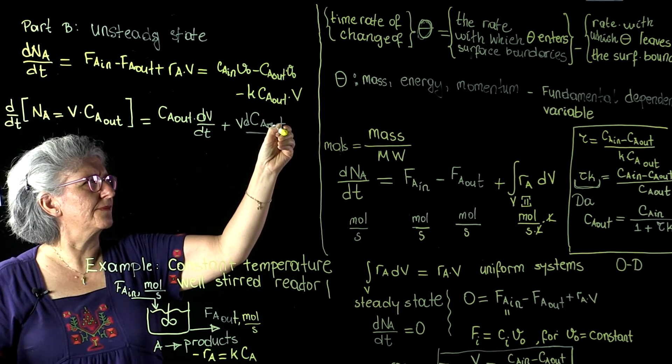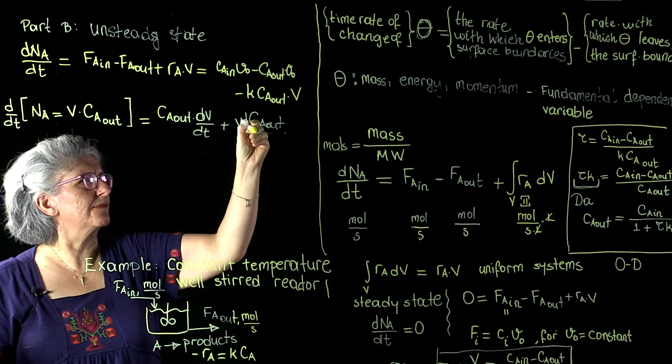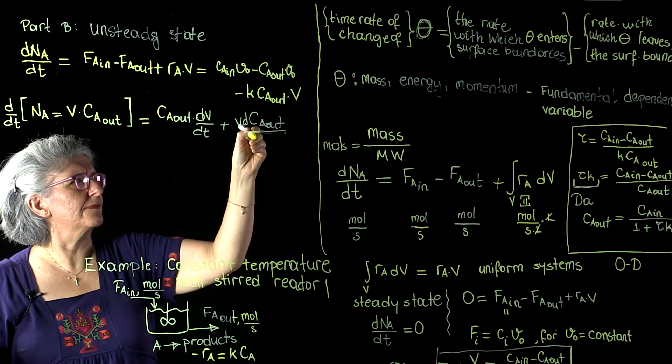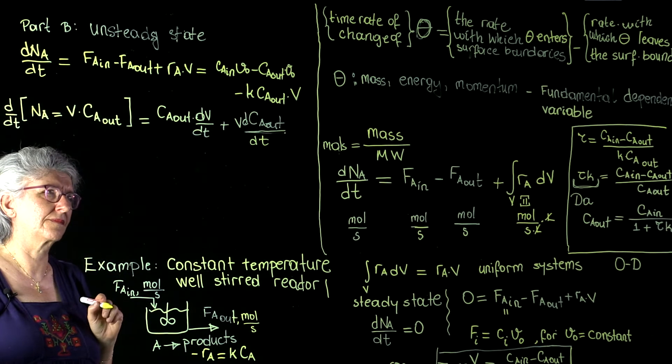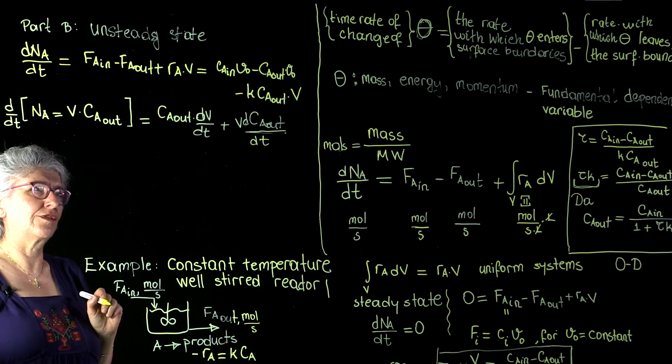CA out times dV/dt. Of course, there are two reasons that an unsteady state condition can happen in a reactor.